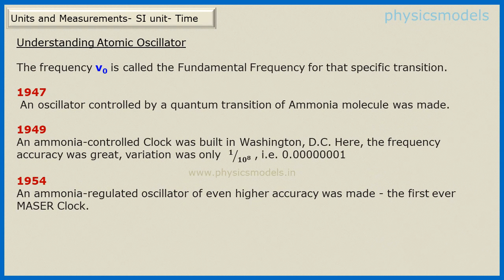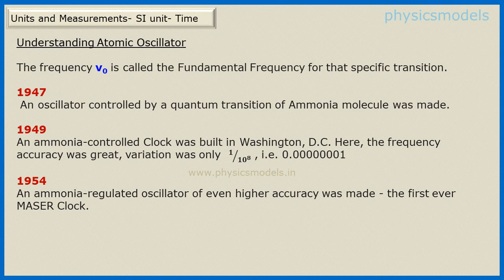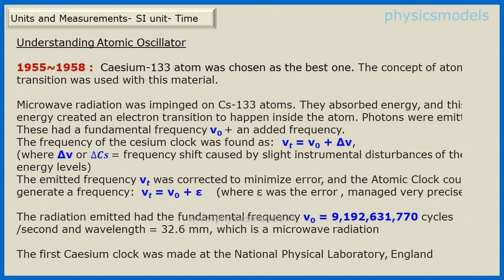Scientists started making atomic oscillators to get accurate timing. They first made an ammonia-controlled quantum oscillator in 1947, and in 1949 the clock was built in Washington. The accuracy was fantastic — the variation in timing was only 1 in 10 to the power of 8 seconds. In 1954 scientists wanted even higher accuracy. From 1955 to 1958 they decided on cesium-133 as the most suitable material in the periodic table for several reasons, and they used the concept of atomic transition.